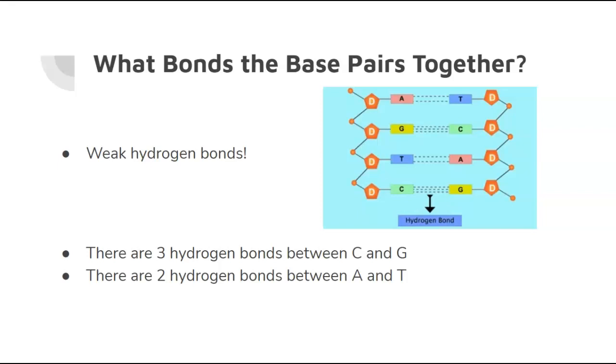But the key here is that hydrogen bonds are what keeps DNA together, and there are three bonds between C and G, and there are two bonds between A and T. So, there are a different number of bonds between the two sets of base pairs.